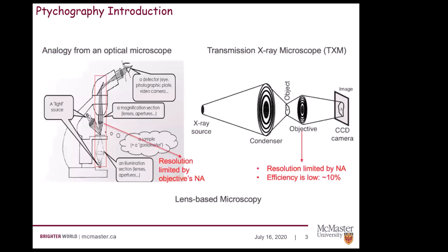For conventional microscopes — both optical and electron microscopes — the resolution is limited by the numerical aperture of the optical lenses. For the scanning transmission X-ray microscope (STXM), the resolution in scanning mode depends on the size of the illumination spot, which is determined by the outermost zone width of the zone plate. Currently, zone plates with 20 nanometer outermost zone width can be manufactured, meaning the highest spatial resolution of STXM is around 20 nanometers.